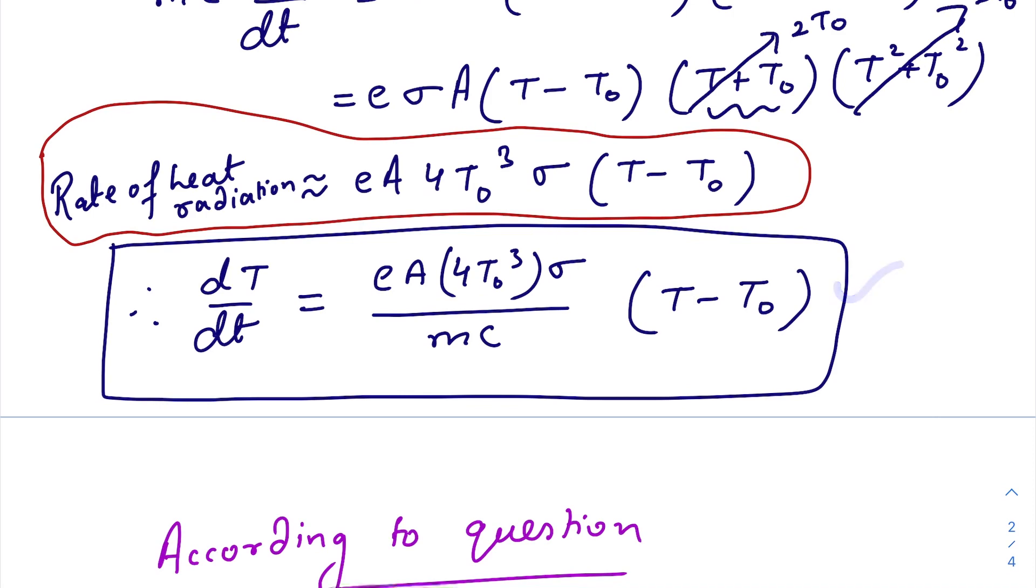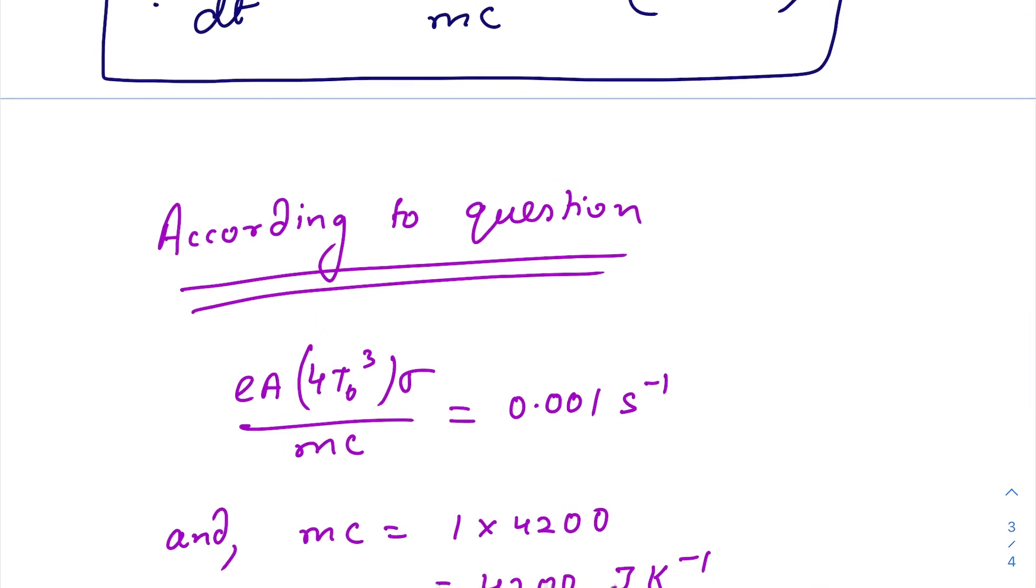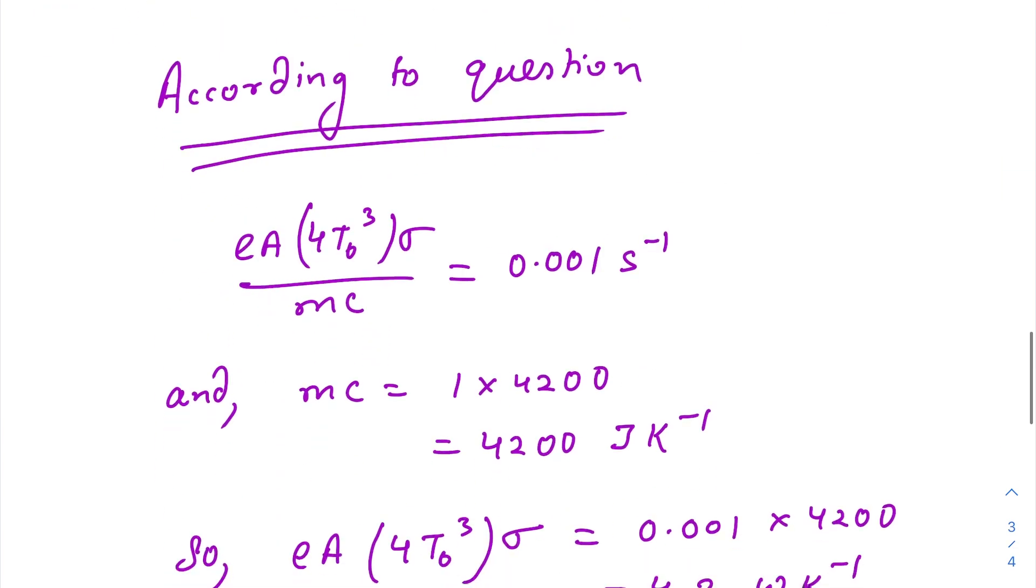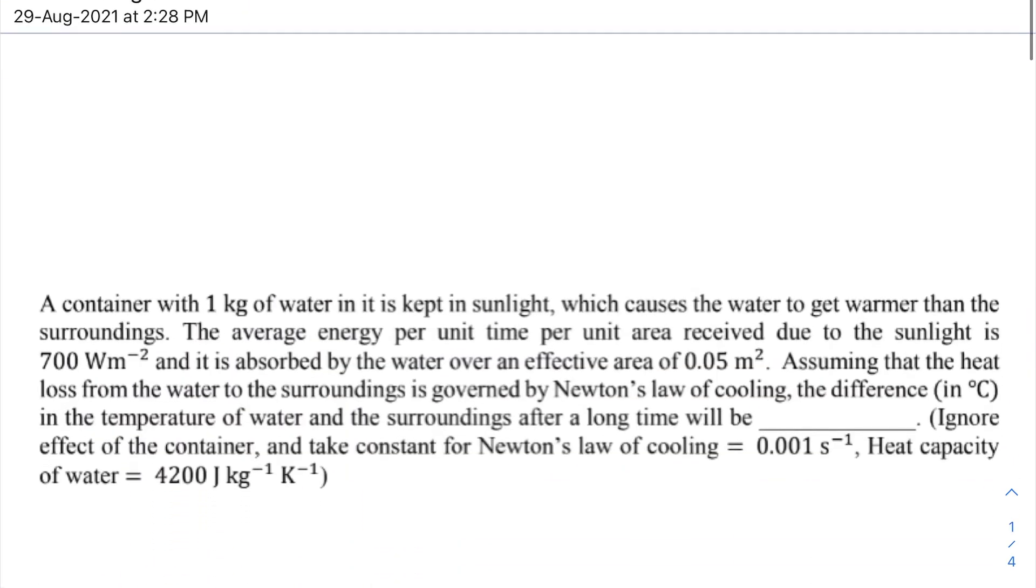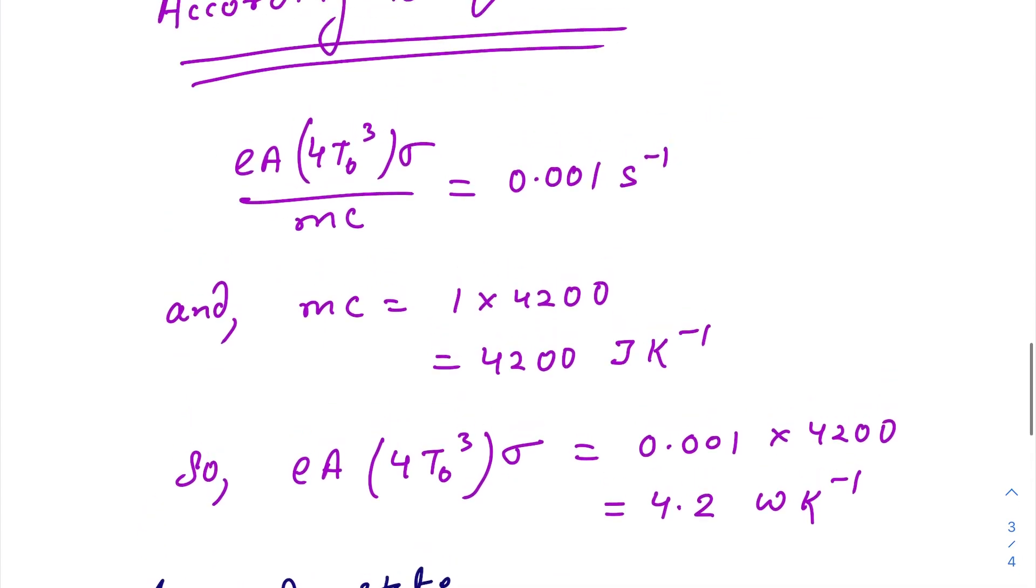This is Newton's law of cooling and we will also use in our future question. According to the question, they have given us the value of this constant. This is the constant for Newton's law of cooling. This guy here is equal to 0.001. C is given and M is 1 kg.